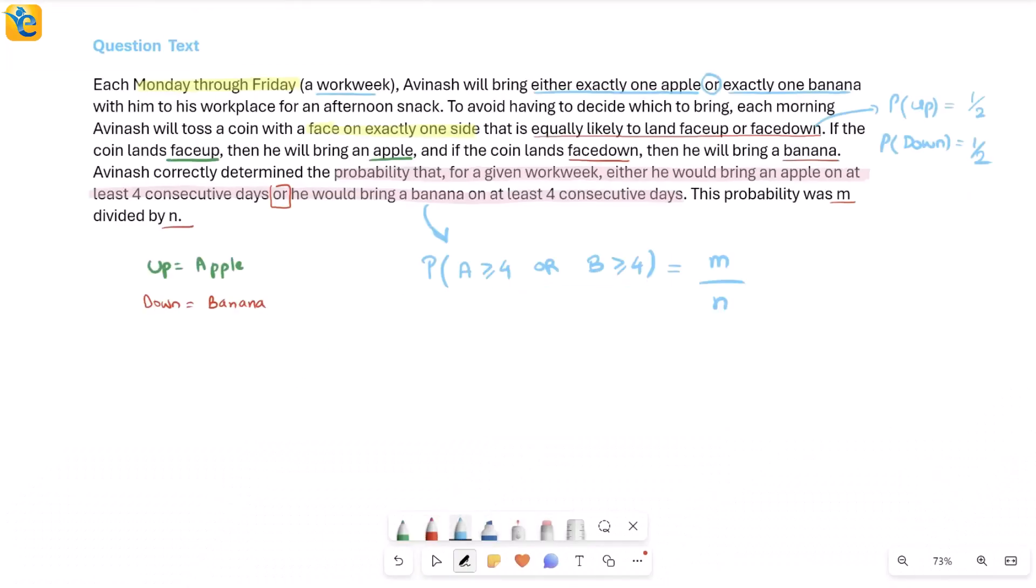Let's get back to the question at hand. It's something or something else, two events connected with an or. Both of these are obviously events that cannot happen together. If in a five-day work week I got apple on at least four days, then banana on at least four days is impossible. So these are two events that are exclusive of each other.